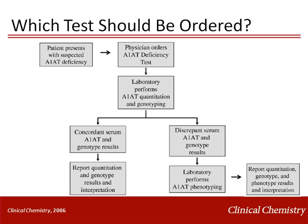Algorithms have been published to help clinicians order the proper tests. If a patient is suspected of having AAT deficiency, the first tests that should be ordered are total AAT concentration and genotyping, which will identify S and Z hetero- and homozygotes. If the total AAT and the genotype results are concordant — for example, a total AAT of 89 mg/dL corresponding to a Z heterozygote — the results should be reported. However, if the results are discrepant — for example, a total AAT of 89 mg/dL corresponding to a non-S, non-Z patient — the lab should perform phenotyping for the detection of rare alleles.